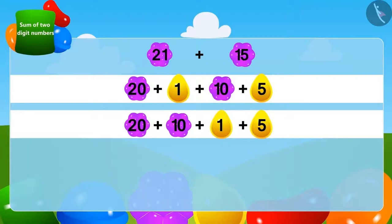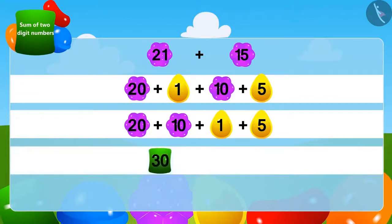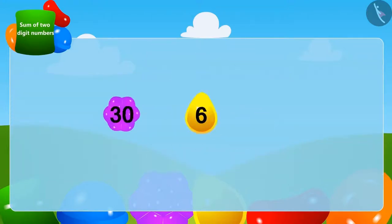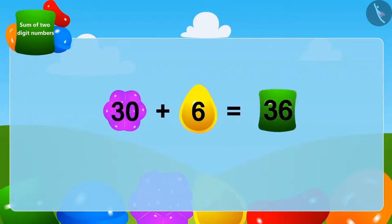Now, we will add the two-digit numbers. Add 10 to 20 and it becomes 30. And now, we add 5 to 1. We have 6. Finally, by adding 6 to 30, we get 36.